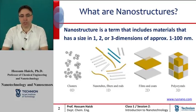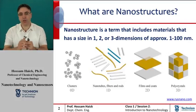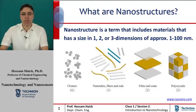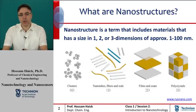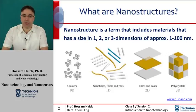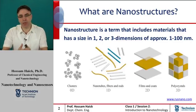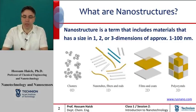Nanoclusters are structures that are 1 to 100 nanometers in each spatial dimension. These structures are categorized as zero-dimensional nanostructures. Nanotubes and nanowires have a characteristic diameter between 1 and 100 nanometers, and a length that could be much greater than that. These structures are categorized as one-dimensional nanostructures.